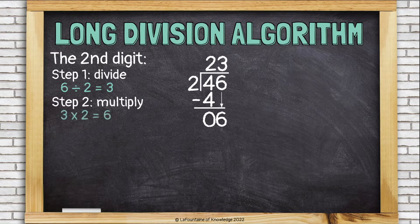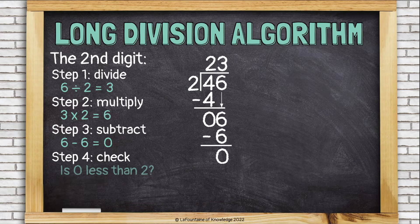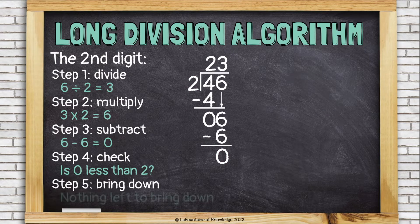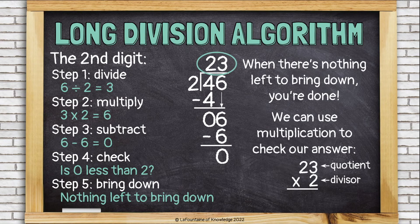Step two, multiply: I'm going to take that three and multiply it by the two. Three times two is six, and that goes right under the other six. Step three, subtract: six minus six is zero. Step four, check: is zero less than two? Yes. Step five, bring down — but there's nothing left to bring down, so I'm done. When there's nothing left to bring down, you're done. Our answer on top is 23.